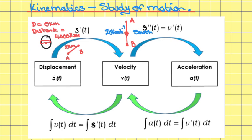Acceleration is the rate of change of velocity. So if you're in a car and you press the accelerator, you start to get faster and faster — your velocity increases. Whereas if you're in a car and you press the brake, your velocity gets less, so your acceleration is decelerating, meaning it is negative.